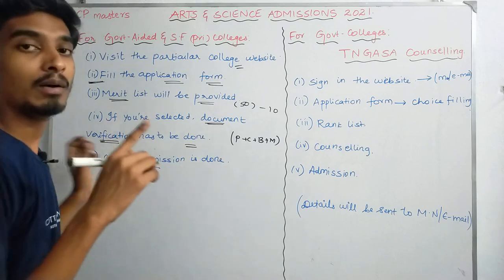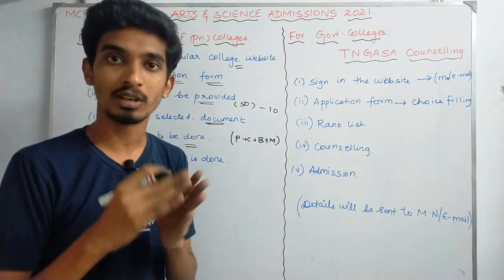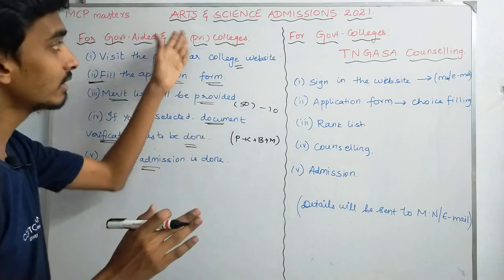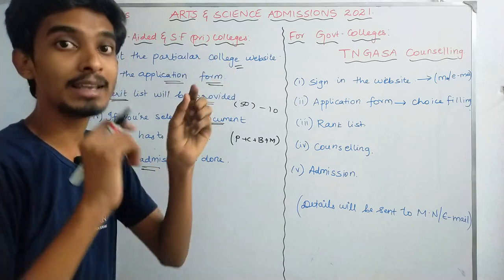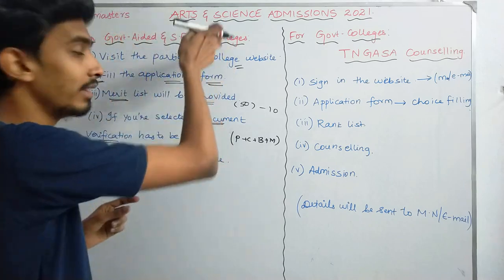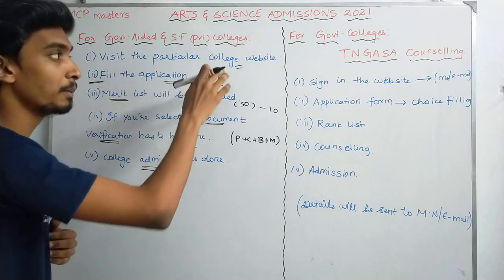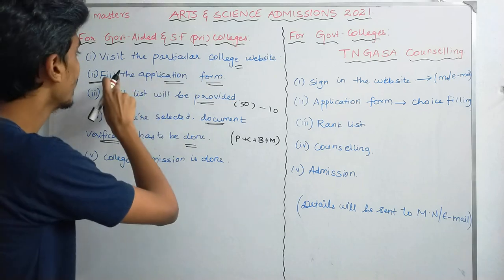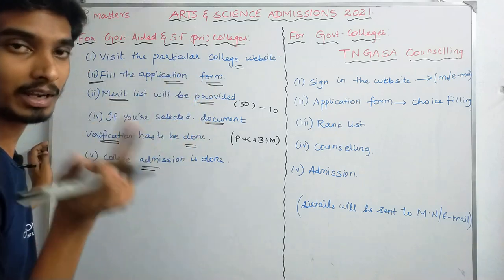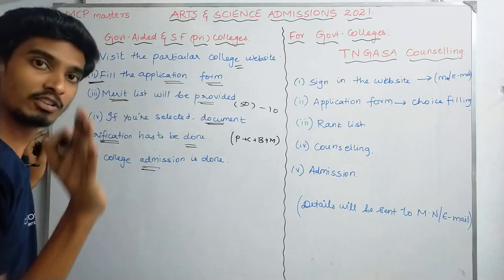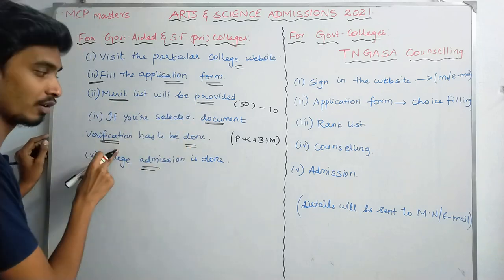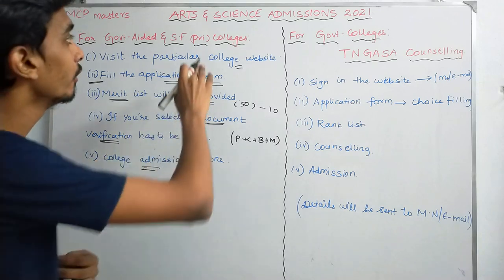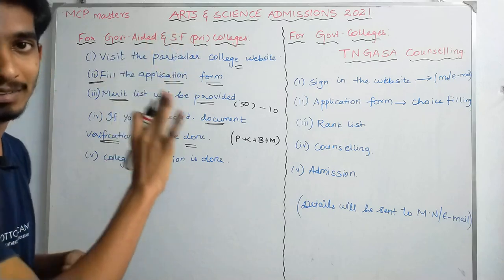For college admission in offline mode, you can submit the documents. This is the procedure for self-financing and government colleges. First, visit the college website. Next, fill the application form with your login and password. Then select the merit list, complete document verification, and choose the college admission. This is for government-aided and self-financing colleges.